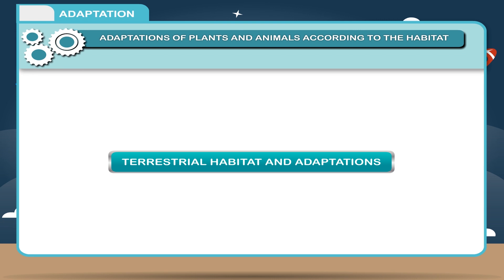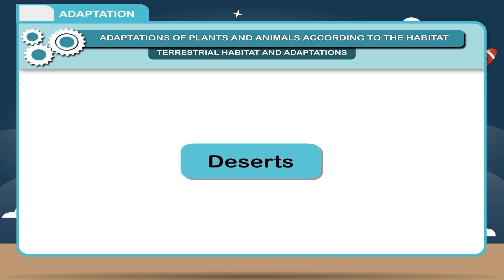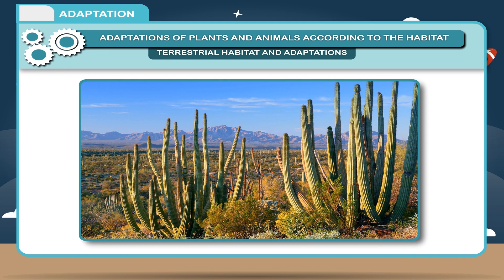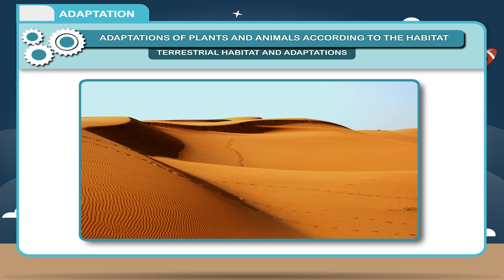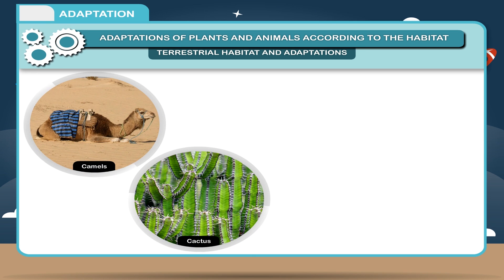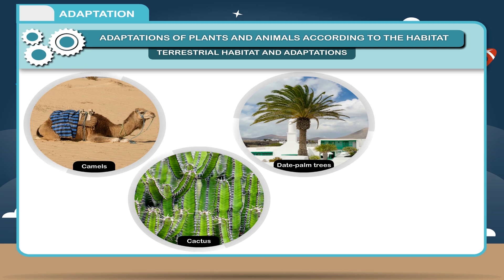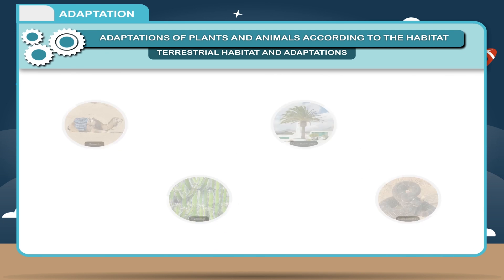Terrestrial Habitat and Adaptations: Deserts. Deserts are areas which receive very little rainfall. Deserts are very hot and dry. Camels, cactus, date palm trees, and rattle snakes are examples of organisms found in the desert.